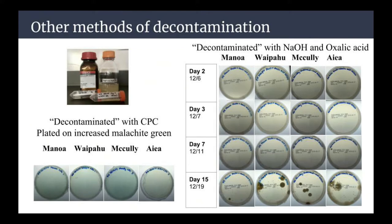So my first method of decontaminating non-tuberculous mycobacteria from the soil was kind of ineffective because a lot of non-NTMs were able to survive my decontamination process. So I tried another method — I repeated the same procedure but instead of the agar plates I used before, I used some that had malachite green, which is an antibacterial dye, to provide more pressure on NTMs to grow as opposed to non-NTMs. Those four plates — Manoa, Waipaio, McCulley, and Aiea — after about 15 days of growth, absolutely nothing grew.